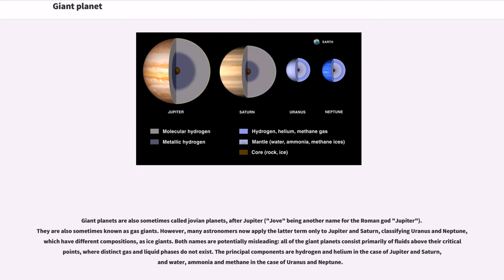The principal components are hydrogen and helium in the case of Jupiter and Saturn, and water, ammonia and methane in the case of Uranus and Neptune.